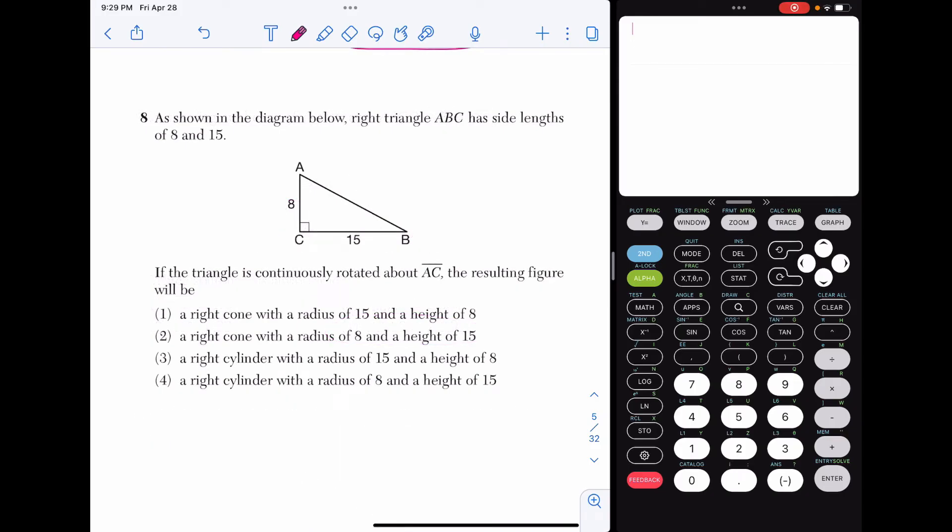Alright, number eight is shown in the diagram below. Right triangle ABC has side lengths of 8 and 15. If the triangle is continuously rotated about AC, the resulting figure is. So anytime you rotate a triangle, you are going to get a cone, but let's draw it out. Even though it says rotate, I'm going to draw this by reflecting the triangle over AC and rounding out this bottom piece here. So I'm definitely getting a cone. Eliminate choice three and four. And this cone has a radius of 15 and a height of 8. So choice one's our correct answer.